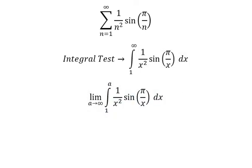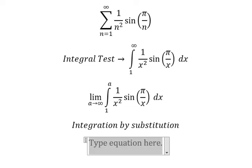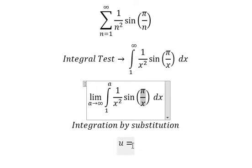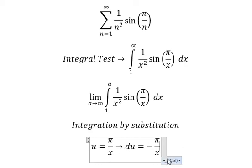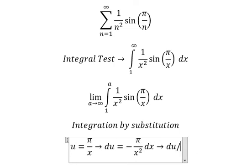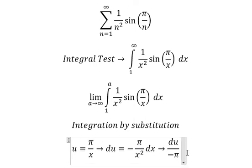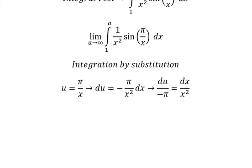Now we can use integration by substitution. I need to put u equals b/x. Next, we differentiate both sides and we have du equals negative b/x² dx. Since we don't have negative b here, I will move negative b to the left, giving us du over negative b equals dx/x².